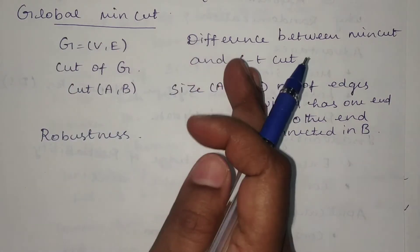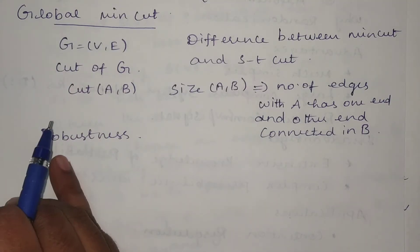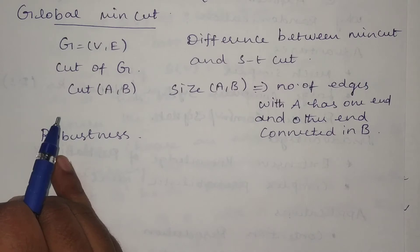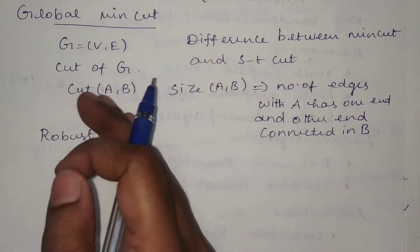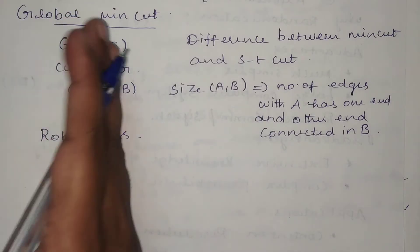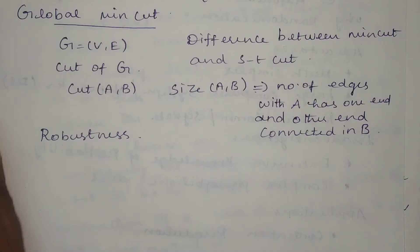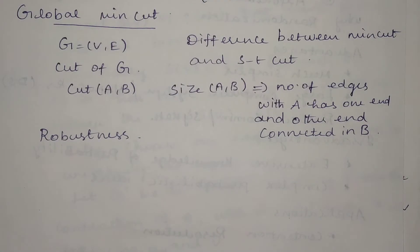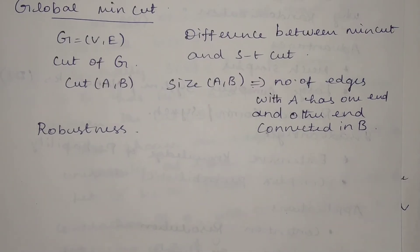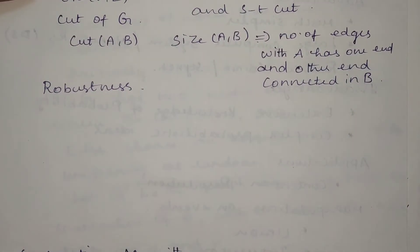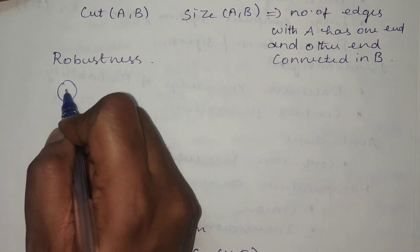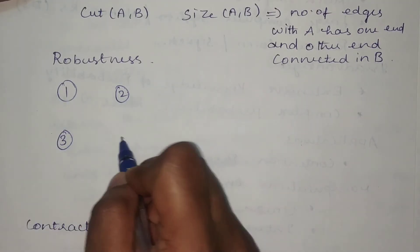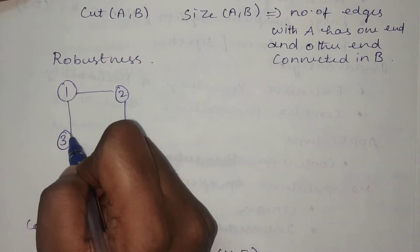The global min-cut has a specific property called robustness — it will have only the smallest number of edges. And since we can place the cut anywhere in the graph without any restriction, that is what defines the global min-cut. Now let's look at the similarities between global min-cut and ST-cut.